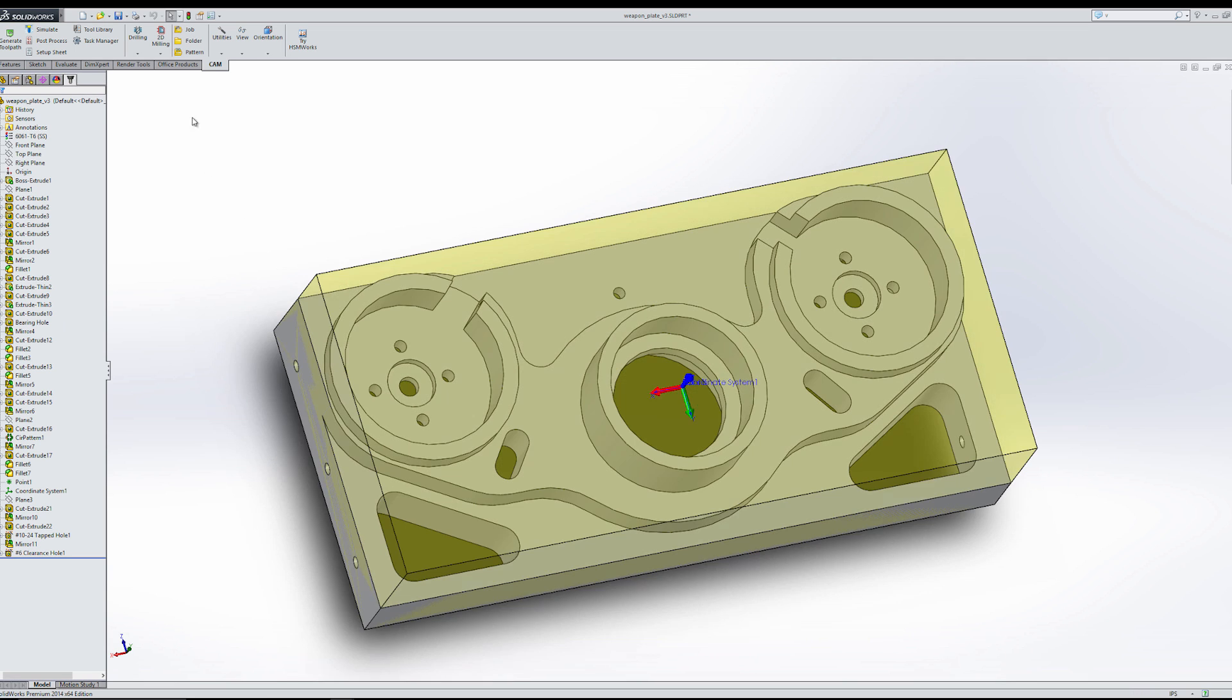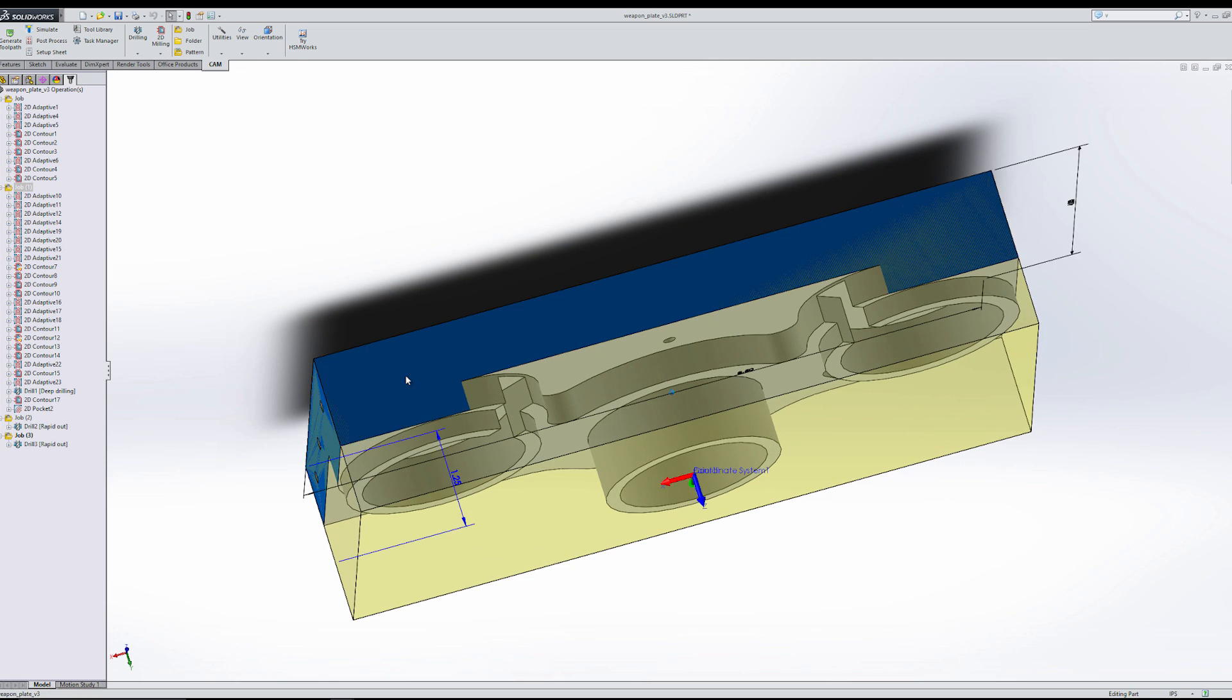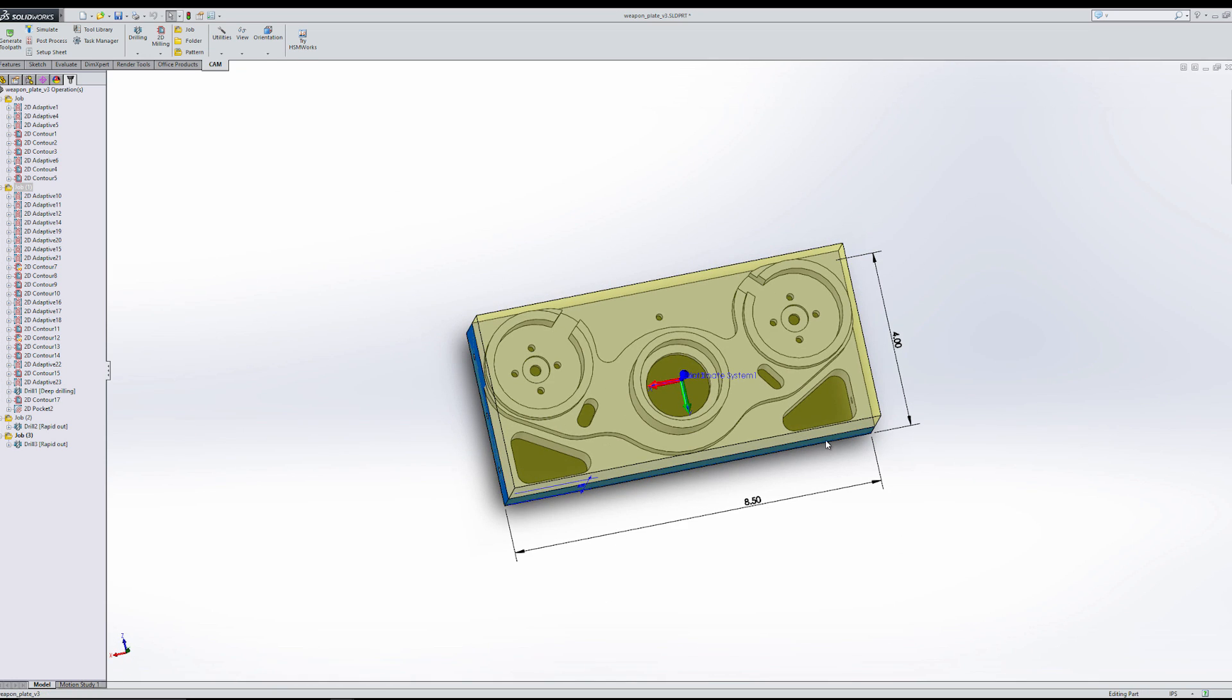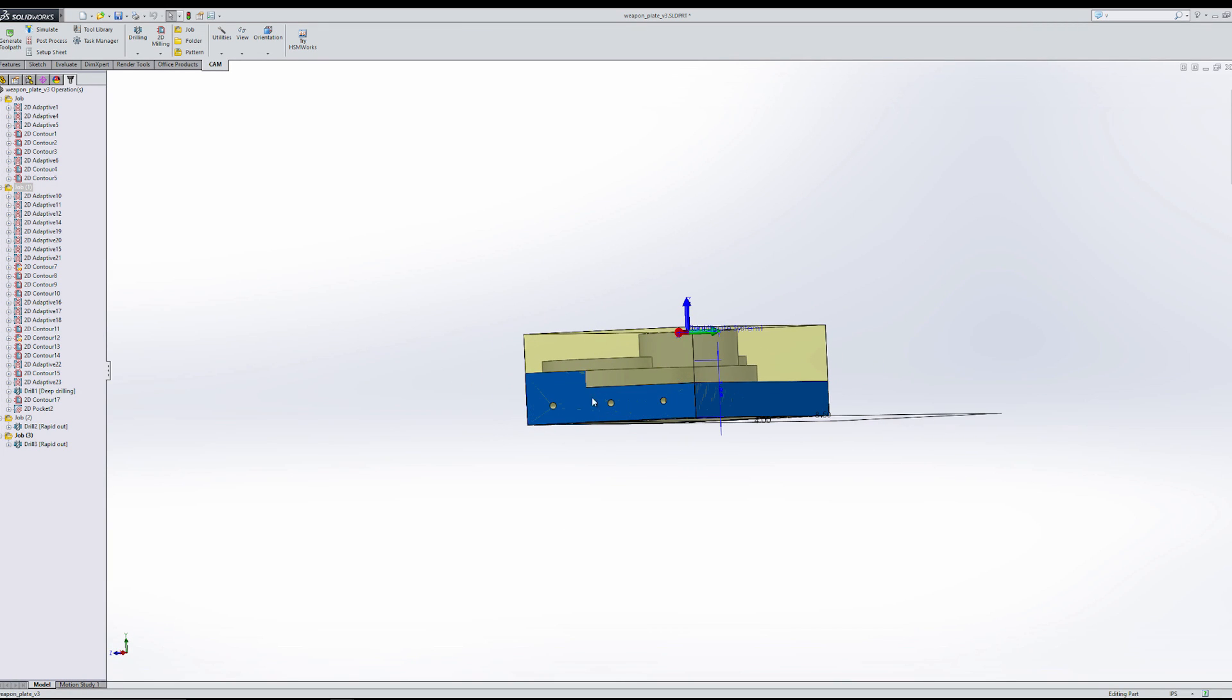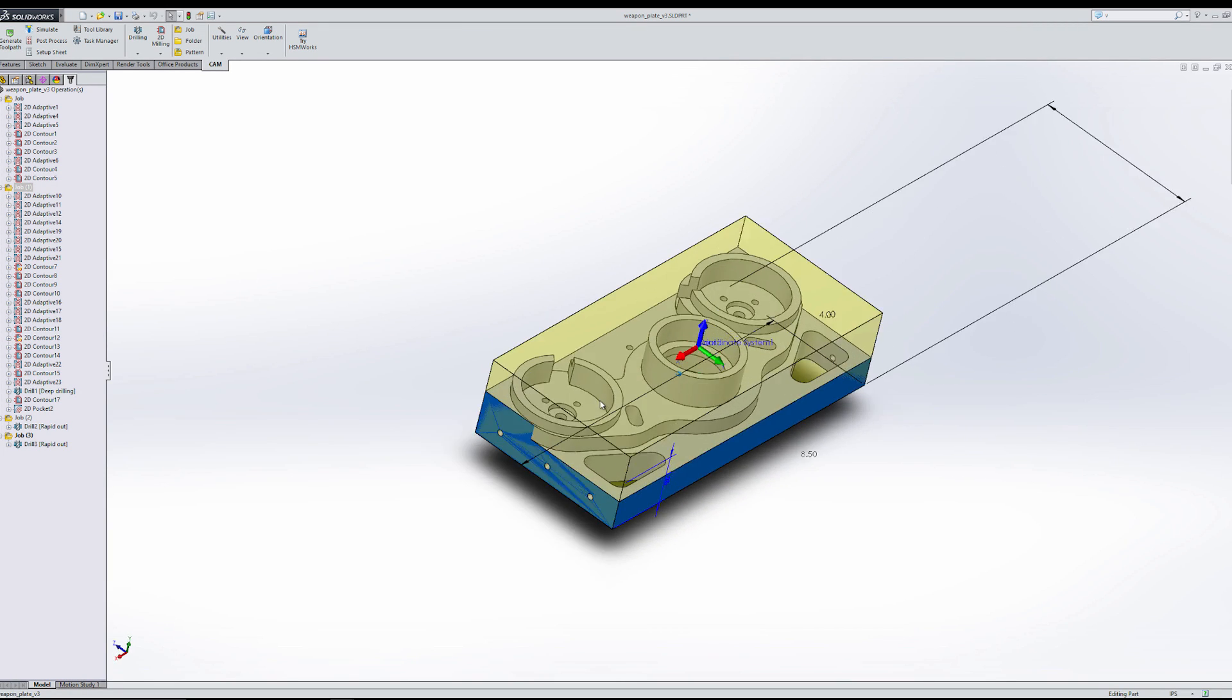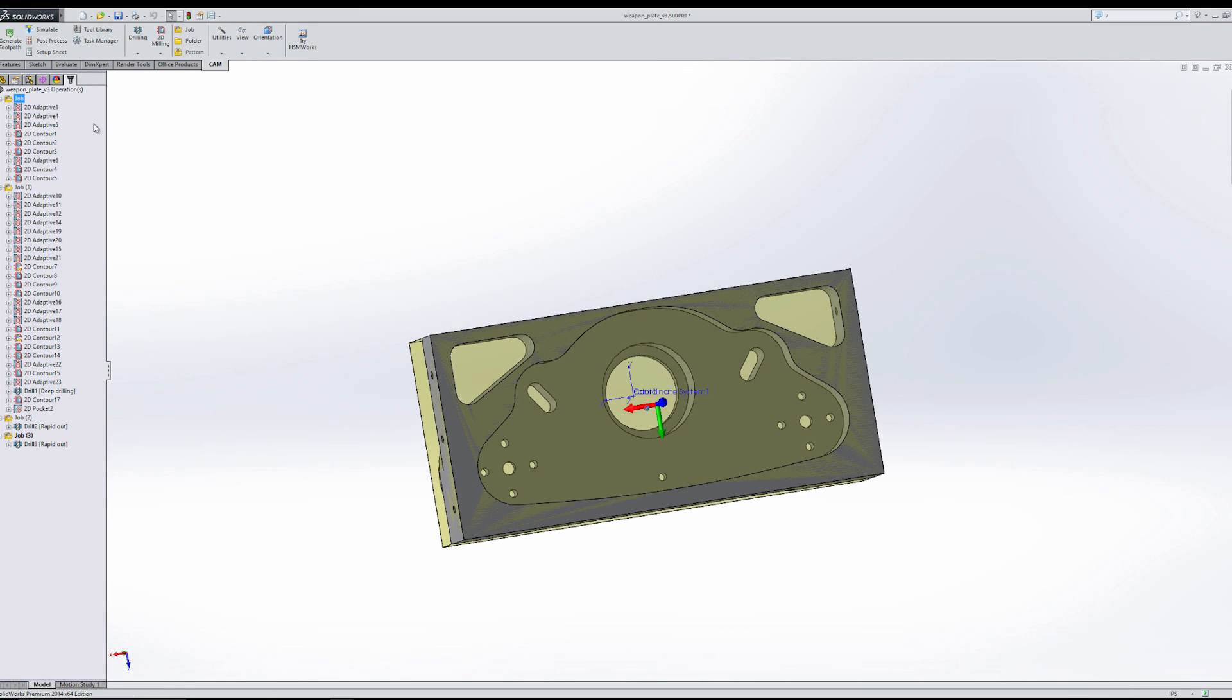If we go over to the CAM tab, you can see that I have my stock defined. The part itself is 8.5 by 4 inches, and here's a representation of the stock that I am starting with.